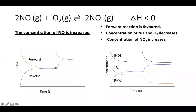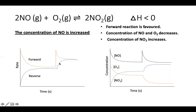At a certain point in time there is a disturbance — we increased the concentration of NO — so the forward reaction is favoured and its rate jumps higher than the reverse reaction. The forward rate rises above the reverse rate and then both flatten out at a new equilibrium, showing NO reacting with O₂ to form NO₂.